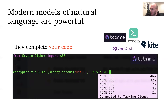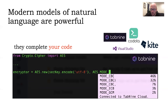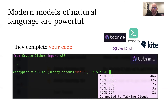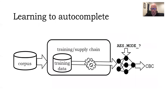For coding, auto-completing a code line saves more time than for just text, because it not only saves you typing time, but also saves you the need to have intimate familiarity with the API you are using. The model suggests something, you accept it, your code works, everything is good. For this reason, there are multiple commercial products gaining increasing popularity.